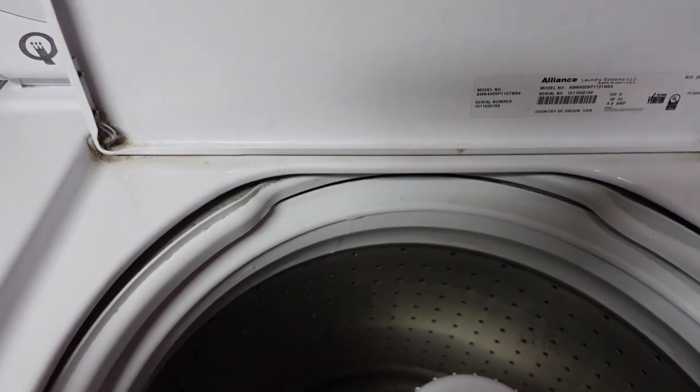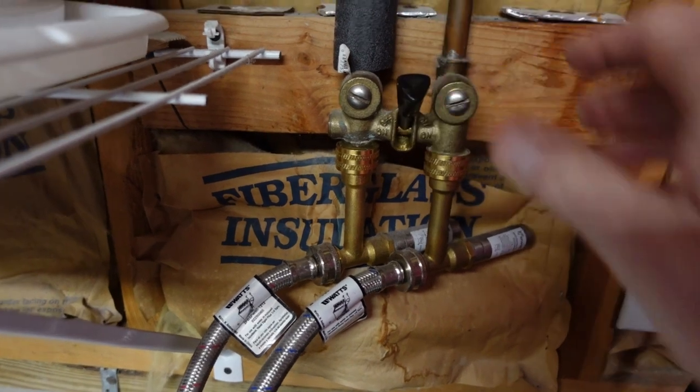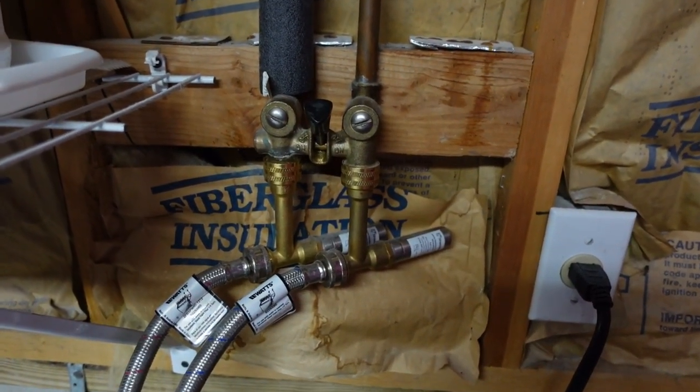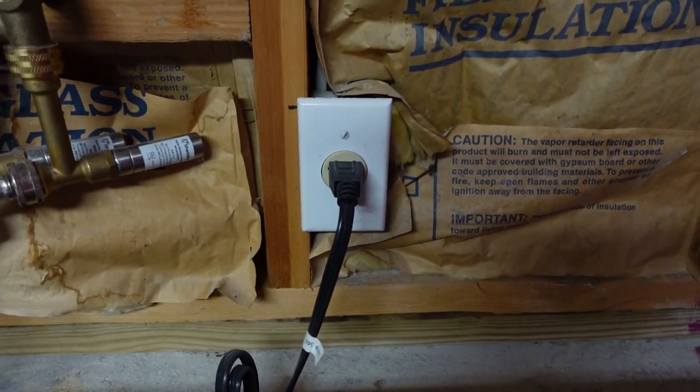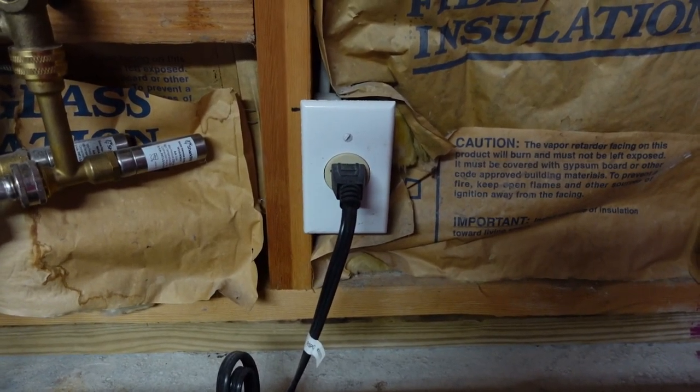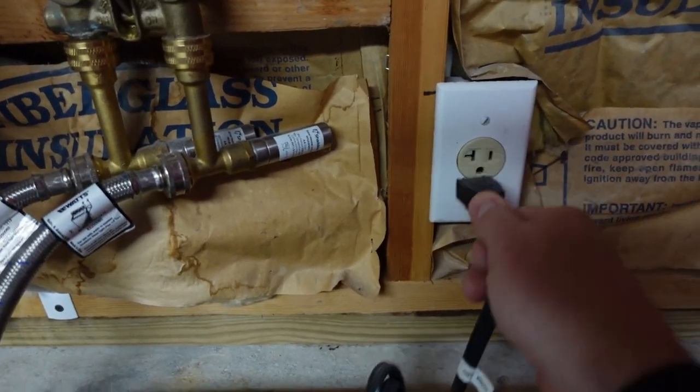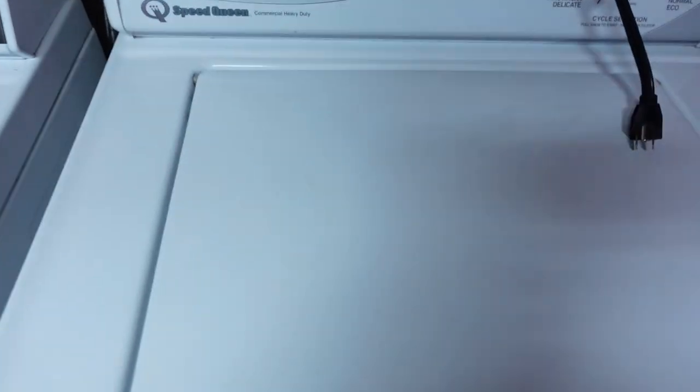First thing first, you want to turn your water supply off to stop that flow of water and also not make a mess when you go to undo the hoses. You also want to unplug the washing machine just because you are going to be playing with some electrical stuff, so it's always a good idea to unplug it so you don't get shocked.